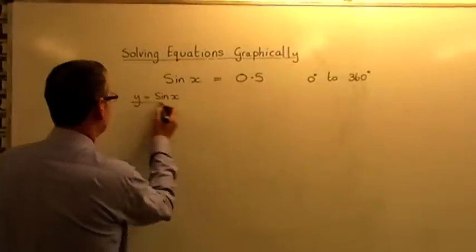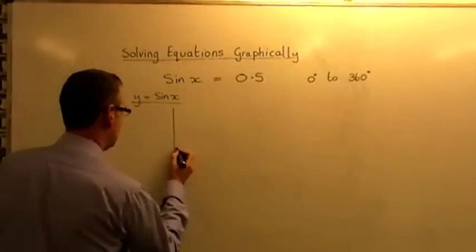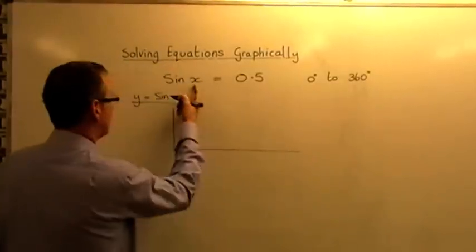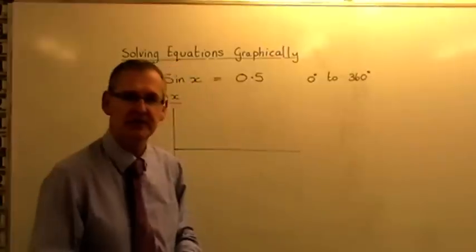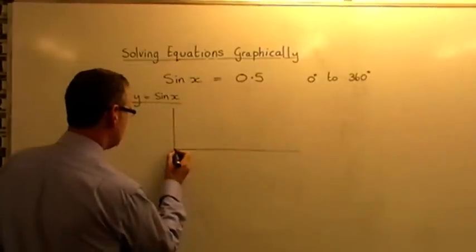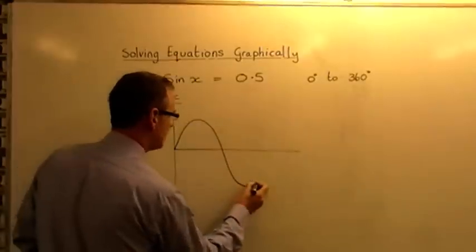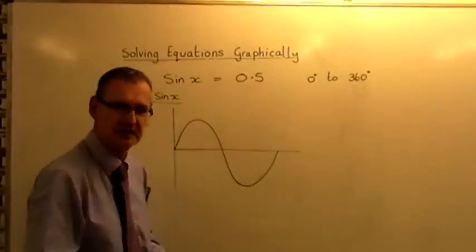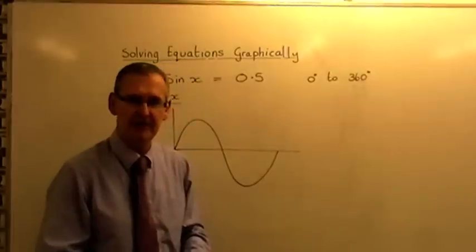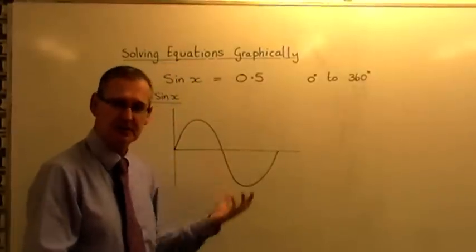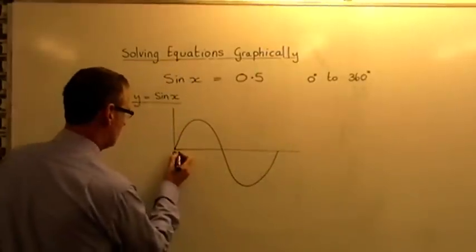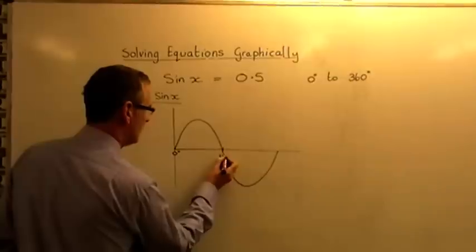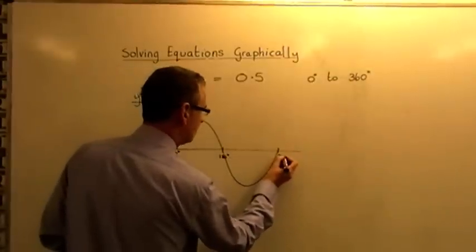If you were to do a table of values and you were to plot the sin x graph, notice here it tells you we want to look between 0 and 360 degrees. So you would just do a sketch. I'm doing a sketch here of y equals sin x. So that is 0 degrees, that's 180 degrees, and that is 360 degrees.